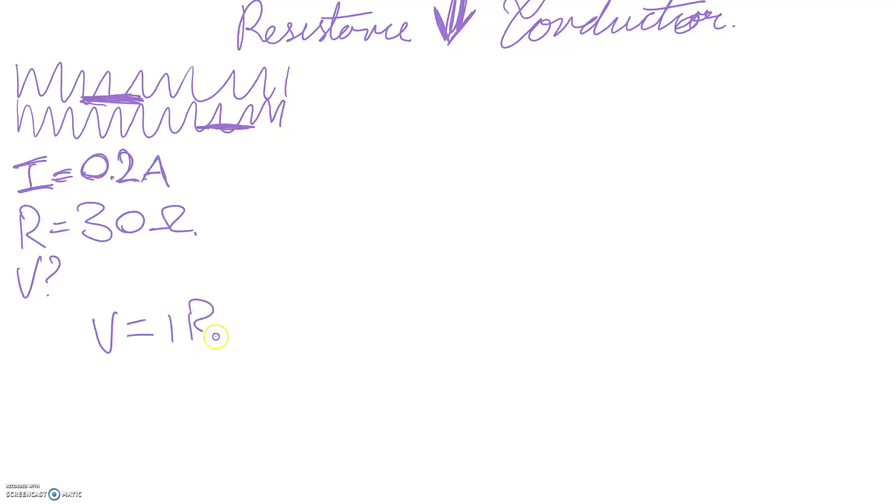We'll use Ohm's Law. V equals IR. Write out the formula. Substitute. V is the unknown. Current is 0.2. Resistance is 30. 0.2 times 30 is 6. This is science. We're doing this maths with a reason. We don't just write 6. It's 6 volts. Now this question was nice and easy because we needed to find V. It's not always going to be that simple.